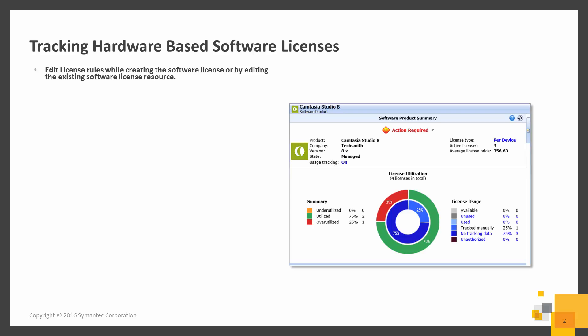You can edit the license rule while creating a software license or by editing the existing software license resource. Every license rule provides settings that help calculate the license consumption. The license can be created or edited by selecting the link under the License Type in the Software Product Summary view.